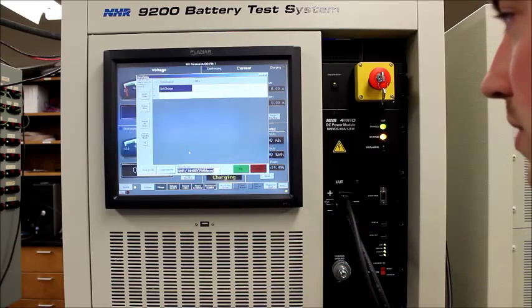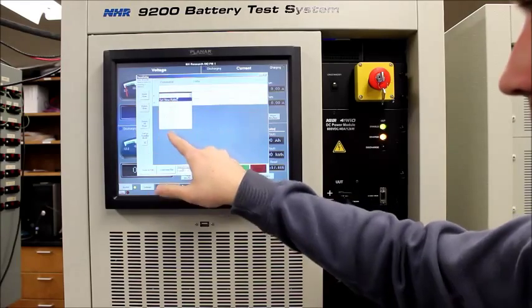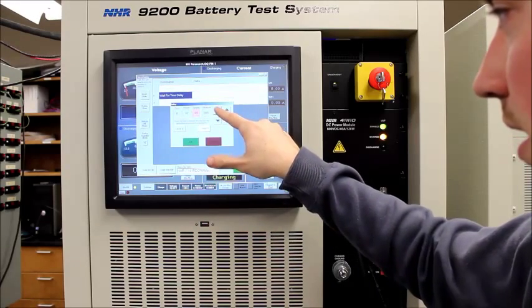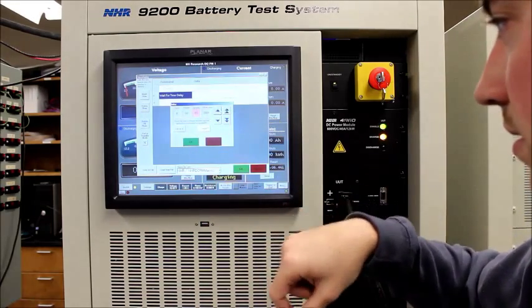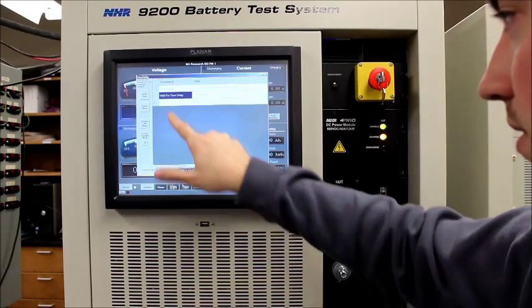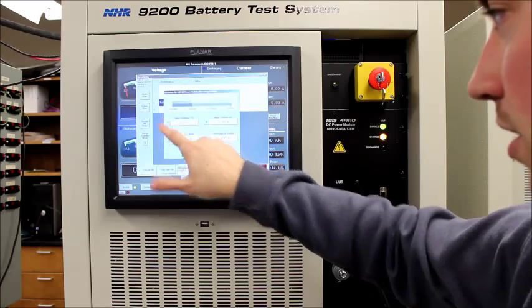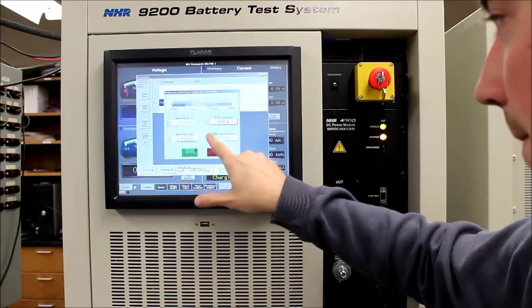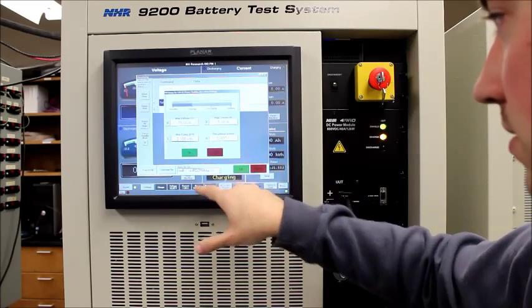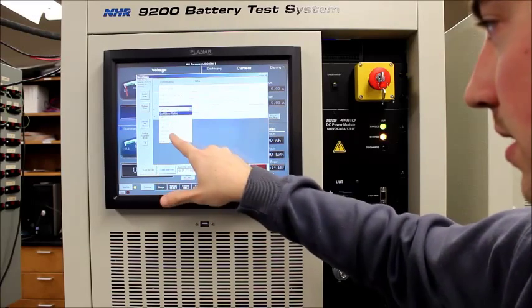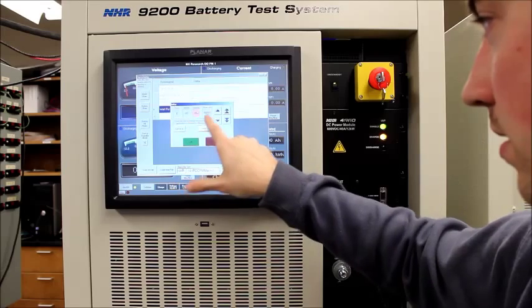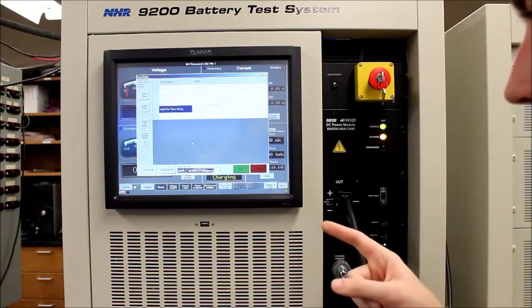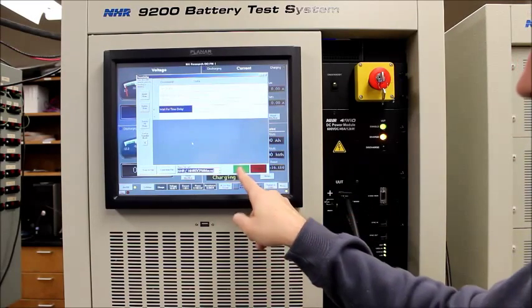So it'll set that value, and then we want to wait three seconds. So wait for time delay. Push on seconds and up to three. And then set the charge, this time 15 volts. And then you want to wait three seconds again. And then I'll show you how to loop it in just a second. So this is sufficient to make a loop. Click okay.